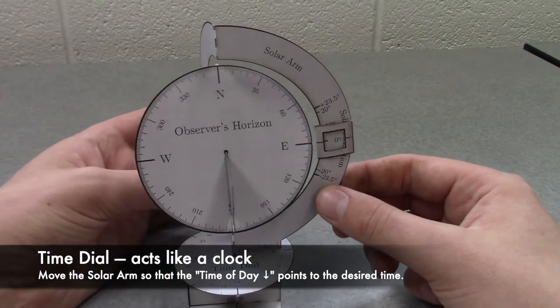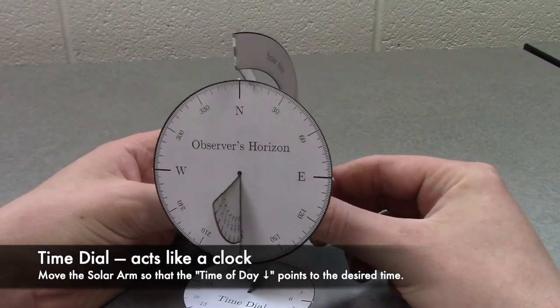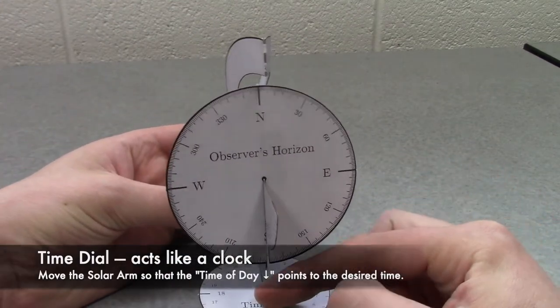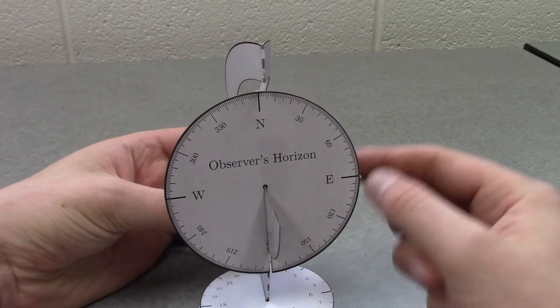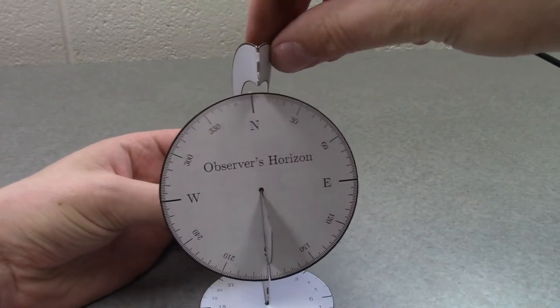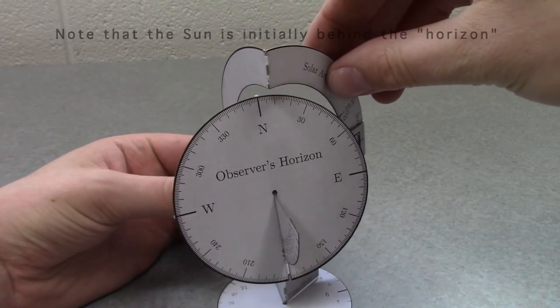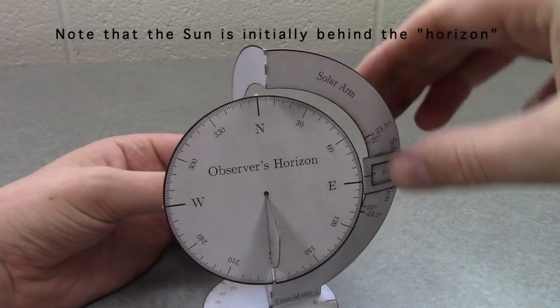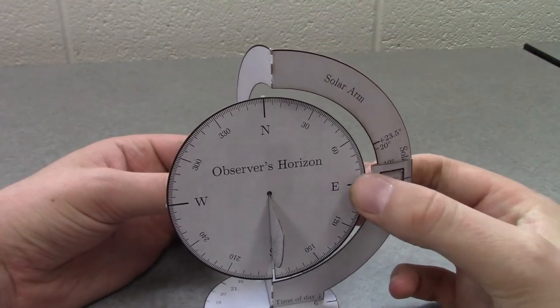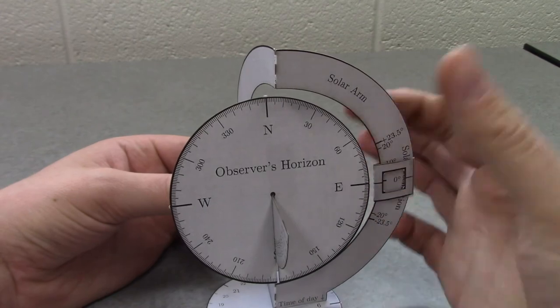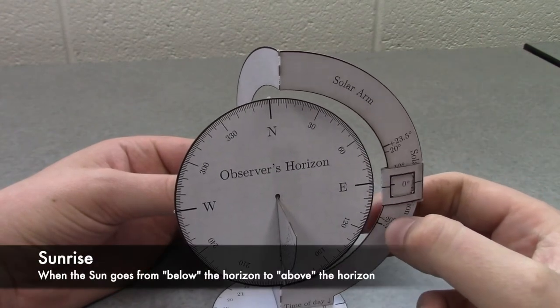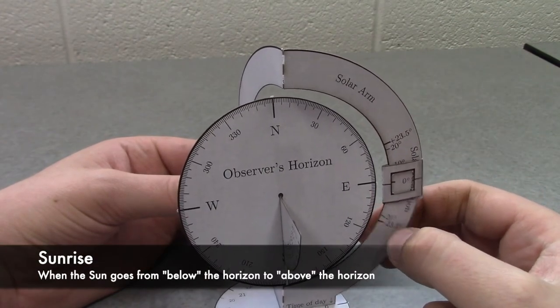So at midnight, we start here, where this time is midnight. Then we fast forward time until this crosses the east-west line, or when it goes from behind this disk, the horizon disk, to above the horizon disk. That's happening about here.